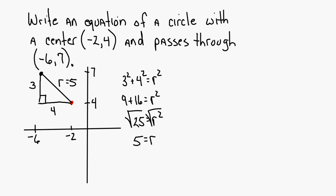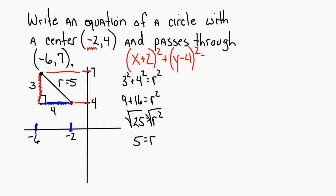Now you've got all the information needed to write the equation. The equation is (X plus 2) squared — because X and the opposite of X at the center gives plus 2 — plus (Y minus 4) squared equals the radius 5 squared, which is 25.